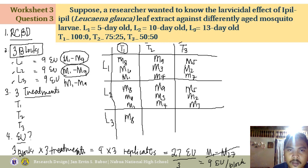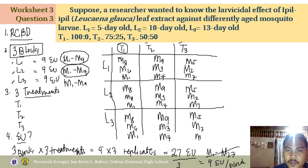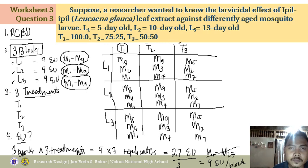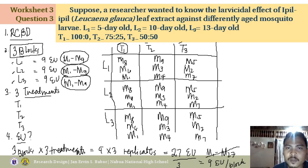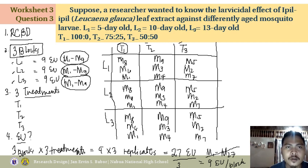For block L3 (13-day old), assign T1: M8, M6, M1; T2: M9, M3, M4; T3: M5, M2, M7. That completes the RCBD structure. However, what is missing for this particular problem is the presence of a control. In a laboratory setup, technicians always use a control to serve as the basis for identifying significant difference.